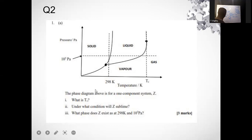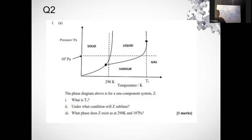What phase does Z exist in at 298 Kelvin and 10 raised to the power 5 Pascal? From the plot, the answer is the liquid phase.